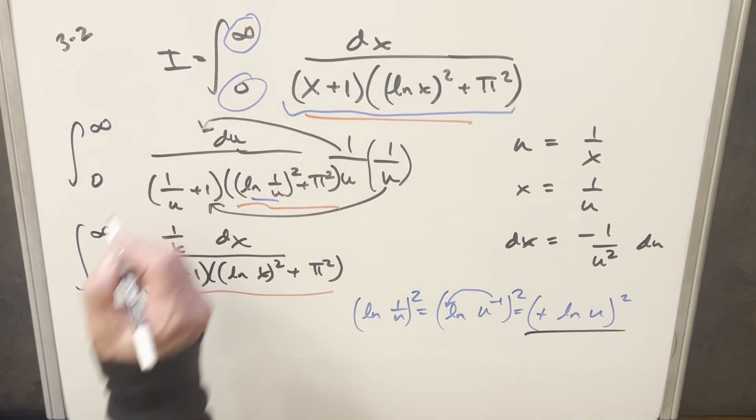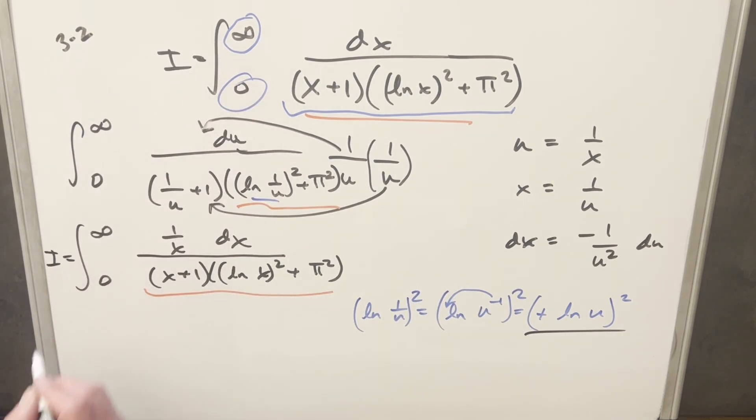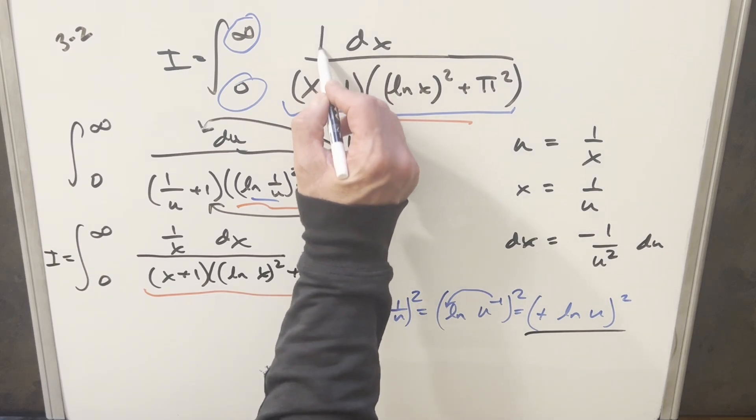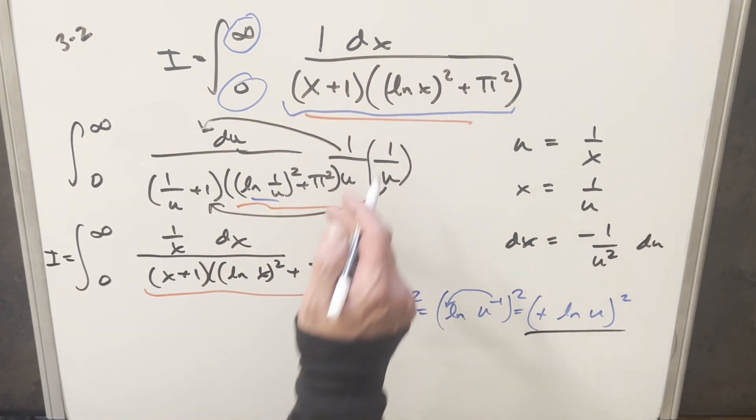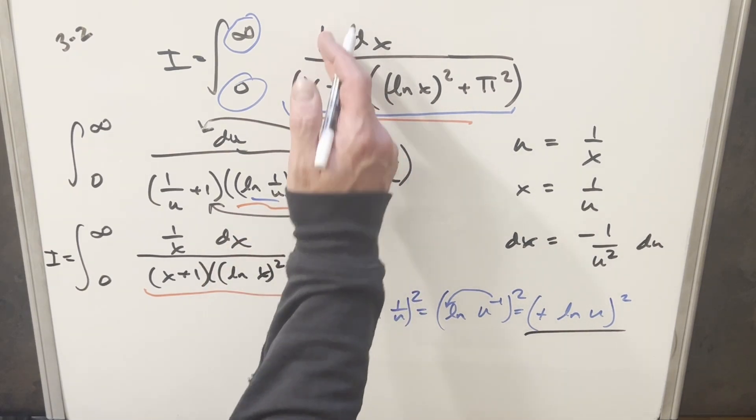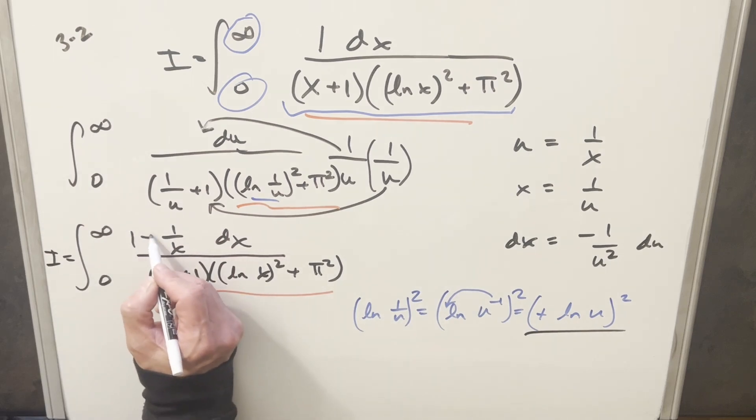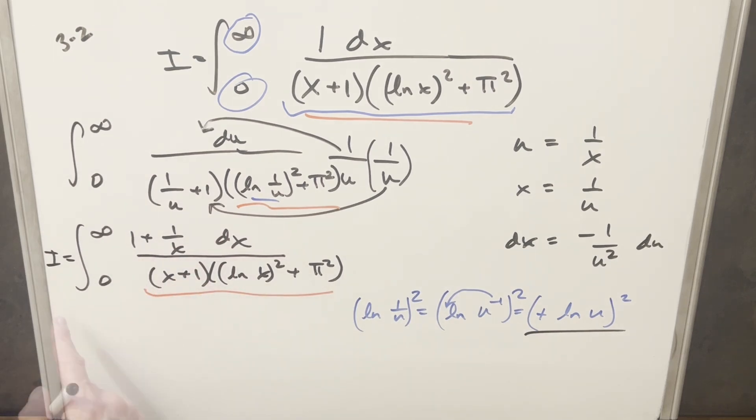We'll just label the first one i. We can label this integral i. And of course, in the numerator over here, we just have a 1. So when we're adding these two together with the same denominator, we're just going to add the numerator. So we just need to add this 1 to 1 over x here.